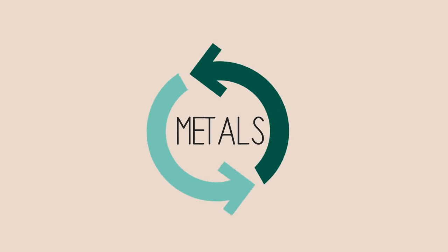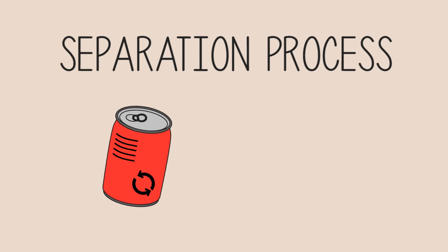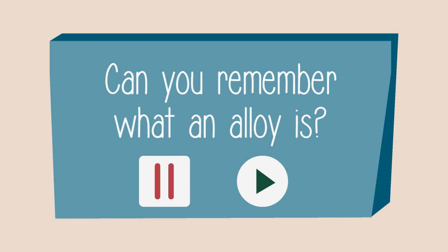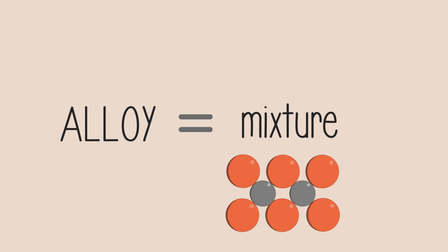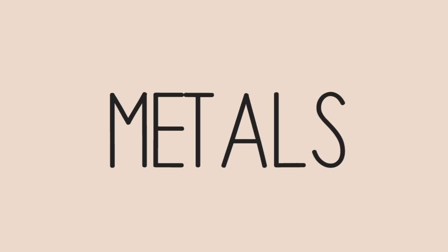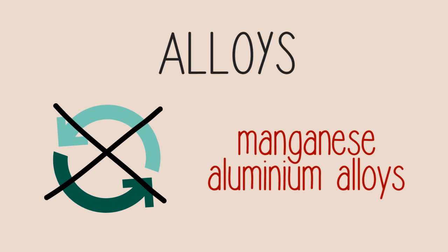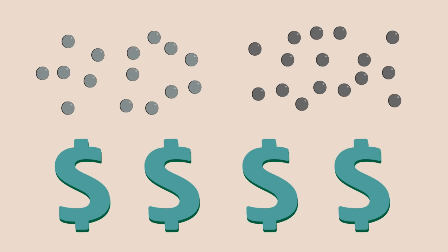The main issue with recycling metals is the separation process in the waste containers. Most often, not all metal products are clearly labeled as recyclable. As well, many metal products are alloys. An alloy is a mixture of two or more elements, with at least one of the elements in the mixture as a metal. Many metal products are made into alloys for increased strength and other desirable properties, but not all alloys can be recycled, such as manganese aluminum alloys. Some alloys which can be recycled need to be molten and separated into their constituent metals, thereby making it a more energy-costly process.